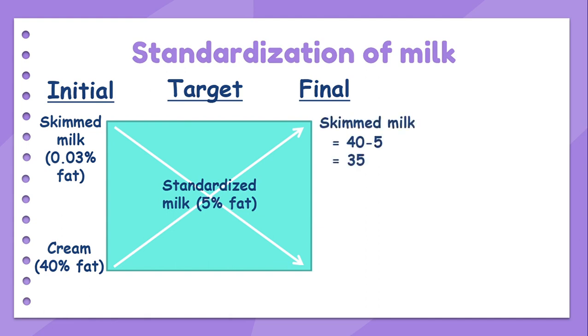which is 35. E equals 5 minus 0.03, which is 4.97. Hence the final ratio of skimmed milk to cream is 35 to 4.97.